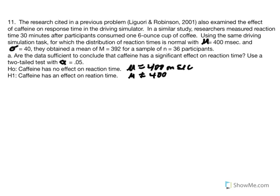Number 11: researchers at a national weather center recorded reaction times thirty minutes after participants consumed one six-ounce cup of coffee. The distribution of reaction times is normal with a mean equal to 400 milliseconds and standard deviation equal to 40. They obtained a mean of m equal to 392 for a sample size of 36 participants. Are the data sufficient to conclude that caffeine has a significant effect on reaction time? Use a two-tailed test with alpha equal to 0.05.